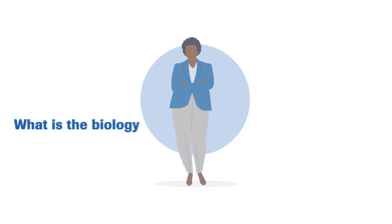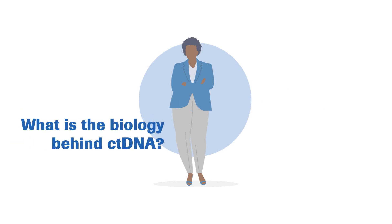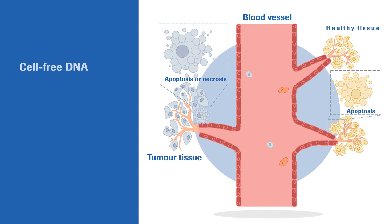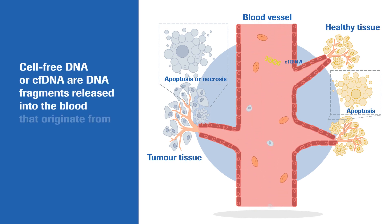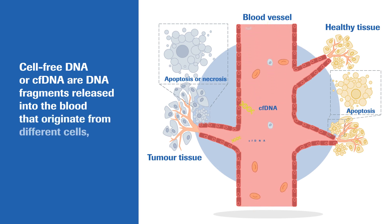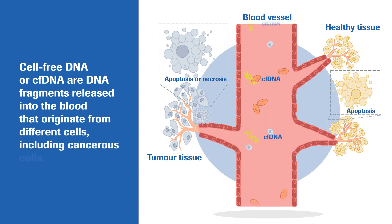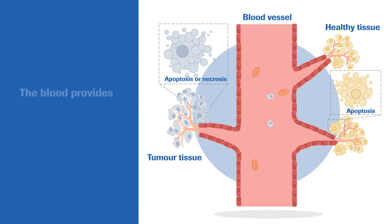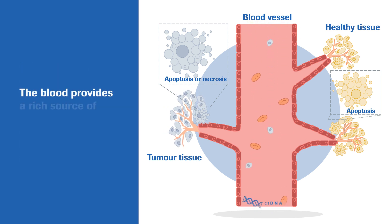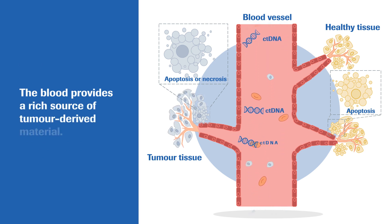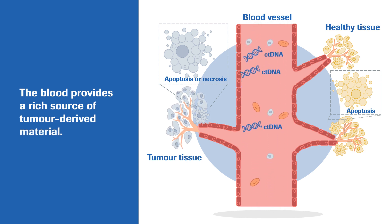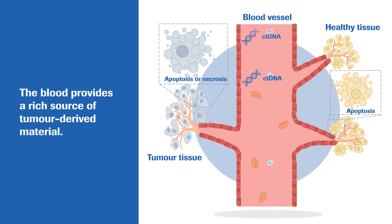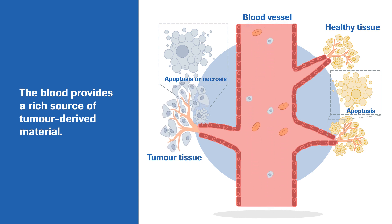What is the biology behind ctDNA? Cell-free DNA, or cfDNA, are DNA fragments released into the blood that originate from different cells, including cancerous cells. The tumour-derived part of cfDNA is called ctDNA, and this can be used as a target for analysis as part of a liquid biopsy. Detection of ctDNA provides a considerable amount of information on the molecular profile of the tumour, including druggable mutations.